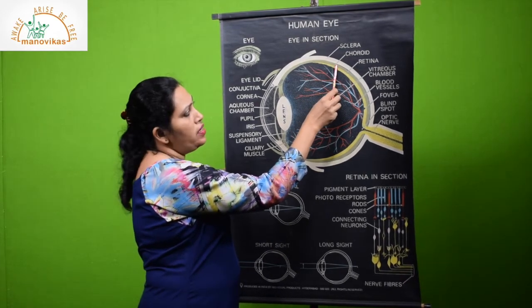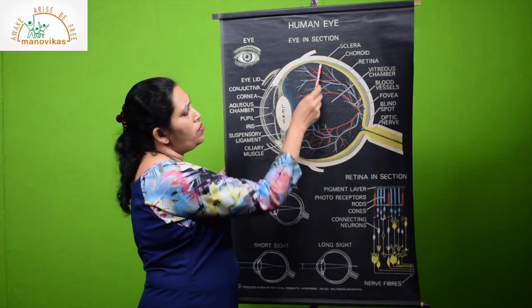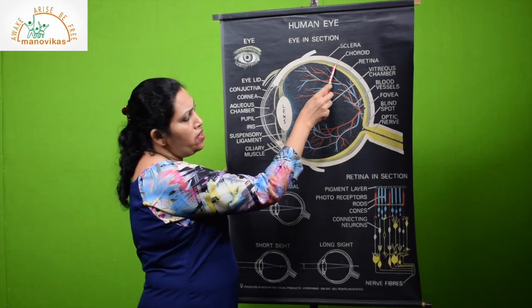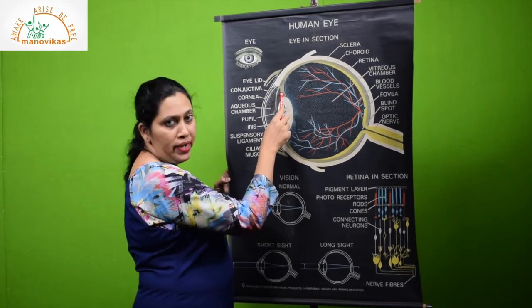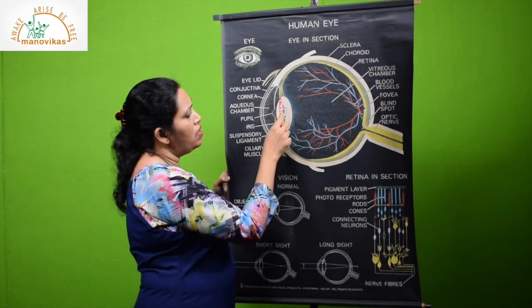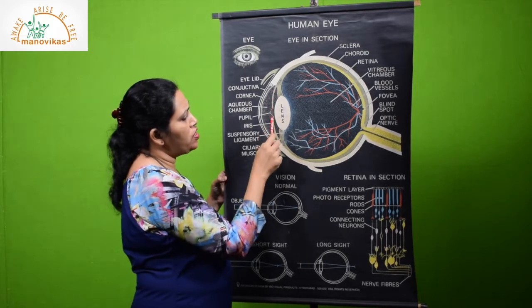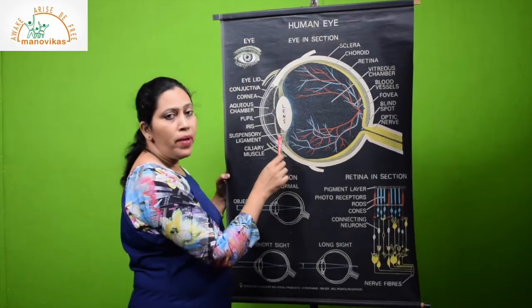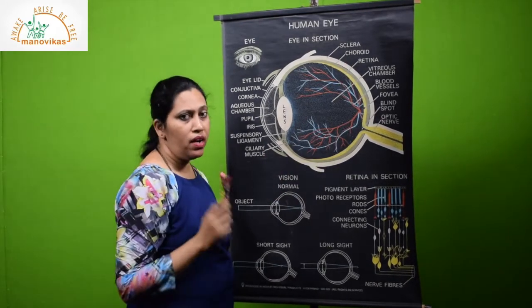The innermost layer is the retina. The inner middle layer in front forms suspensory ligaments which hold a lens. There is a convex lens behind this structure which is called iris.